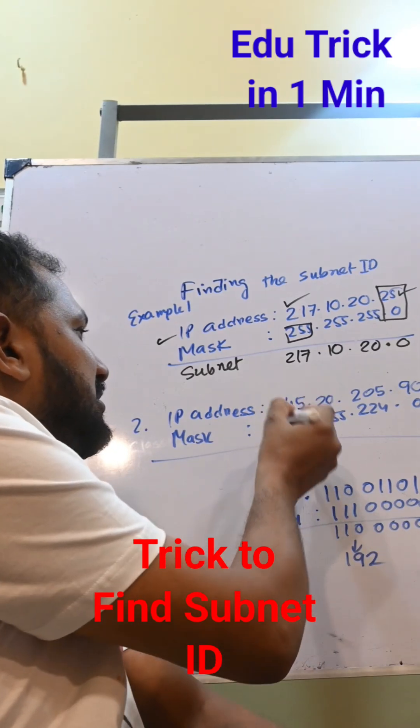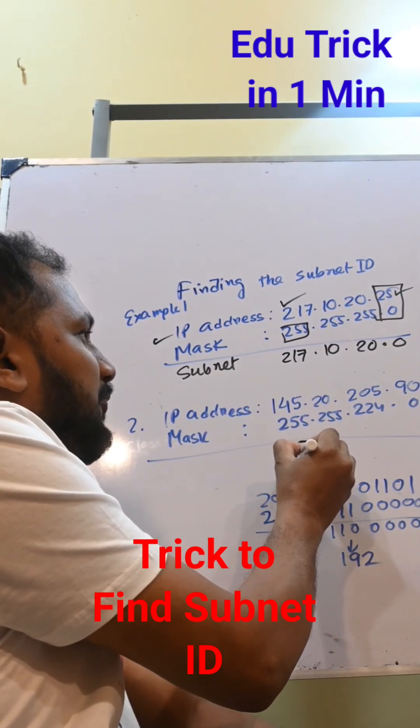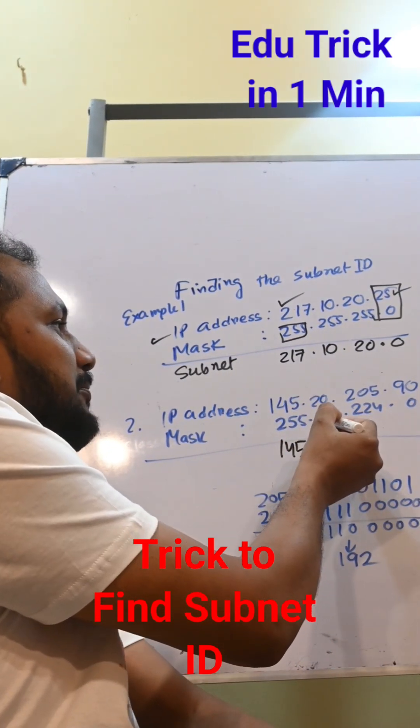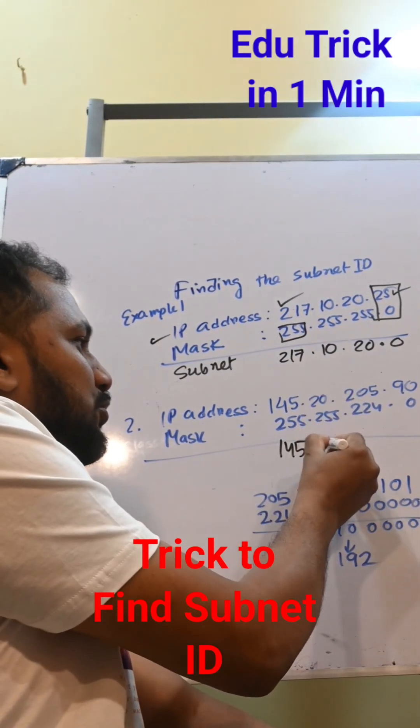Here the subnet mask octet is 255, so we choose 145. Here the subnet mask octet is also 255, so we choose 20.